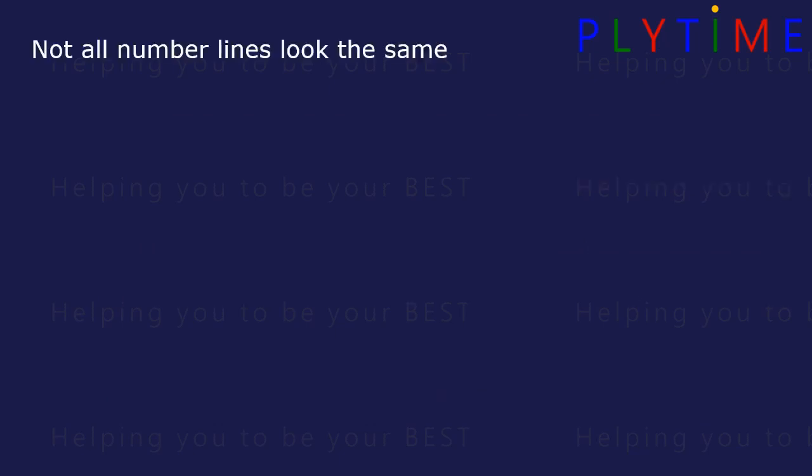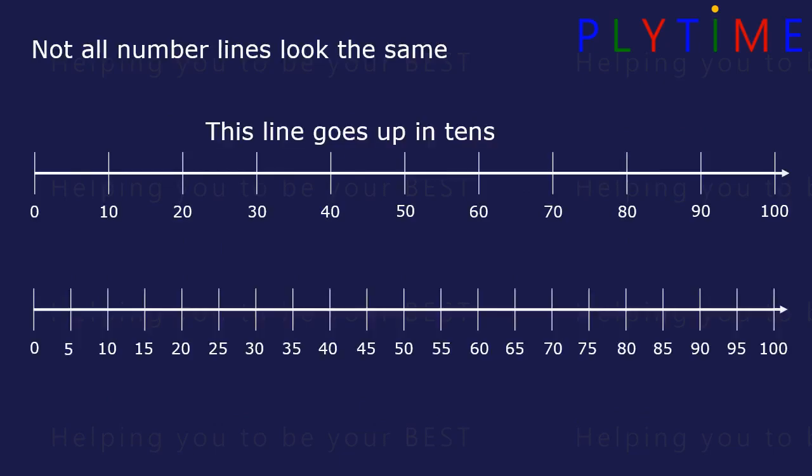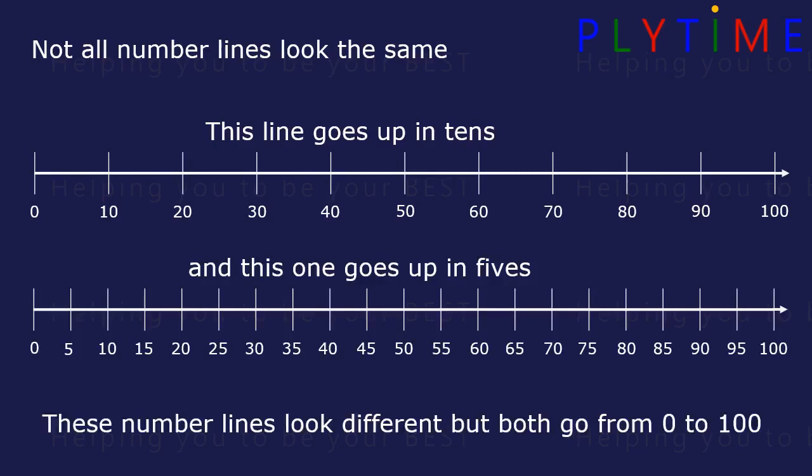Not all number lines look the same. This number line goes up in tens: 10, 20, 30. This one goes up in fives: 5, 10, 15, 20. They look different, but they both go from 0 to 100.